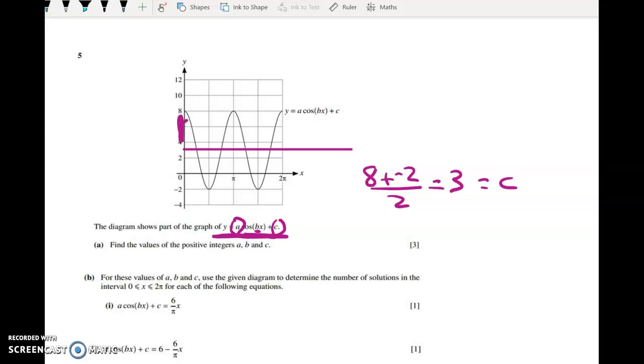Now looking at this distance between 3 and 8, we've got 8 minus 3 equals 5, so the amplitude is going to be 5.